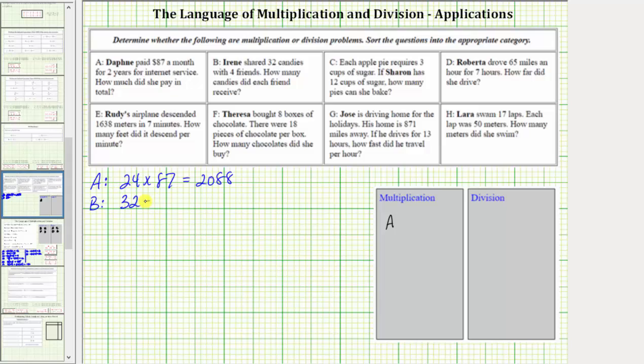32 divided by four equals eight. Each friend receives eight candies. We use division, and therefore we place B in the division box.